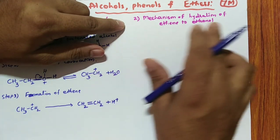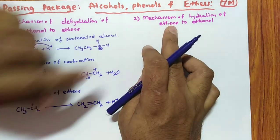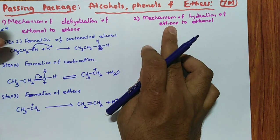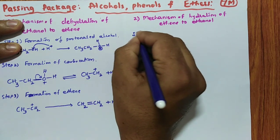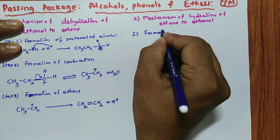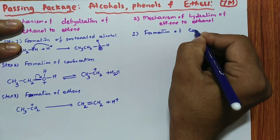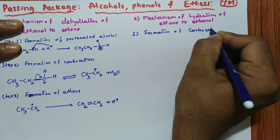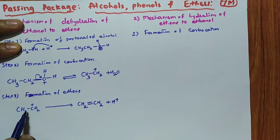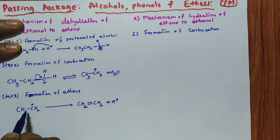Then we will see the mechanism of hydration of ethene to ethanol. All these are the reverse of the dehydration mechanism — remember, reverse of this. In the first step, formation of carbocation. The carbocation in the alkene — this is the first step in reverse, formation of carbocation.